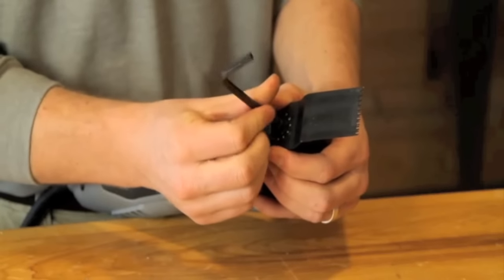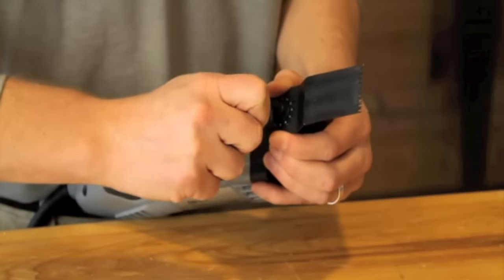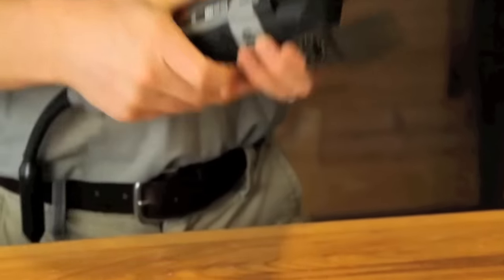Take your allen key, tighten up the flange, secure the blade in place, and you're ready to make your cut with Dremel.